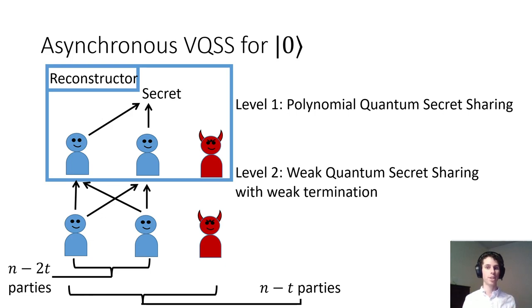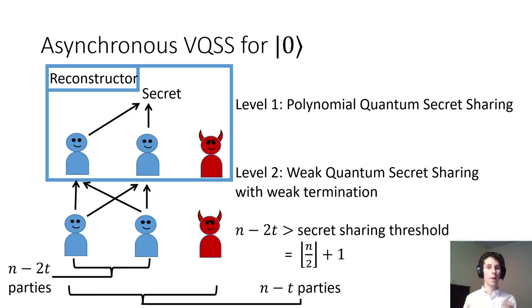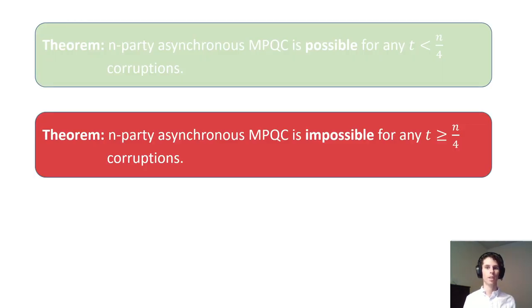Note that because of weak termination, the reconstructor might never manage to reconstruct the level-1 shares belonging to the t corrupted parties which received shares. In fact, it doesn't even have to fail — it could just hang forever when reconstructing those shares. This is why the threshold for reconstruction is n-2t instead of n-t. However, weak quantum secret sharing still prevents the corrupted parties from changing their level-1 shares; their only option is to withhold them. This means that it is always safe to reconstruct with the minimum number of shares, which is just over one half. For more details about the construction, please see the full paper.